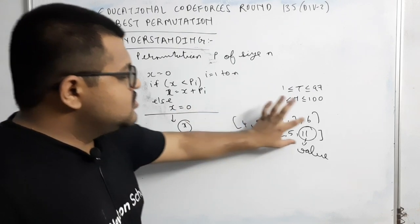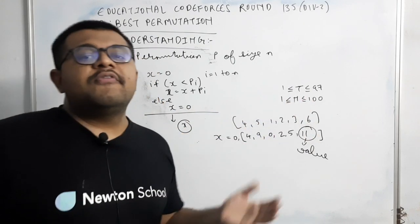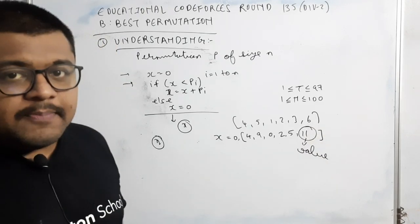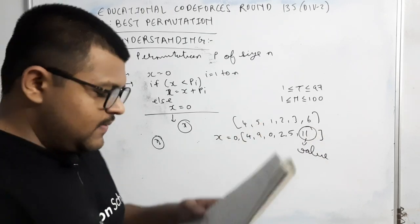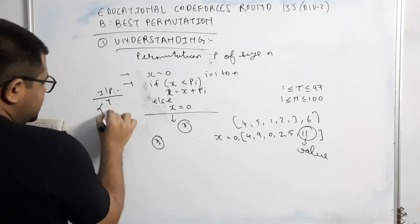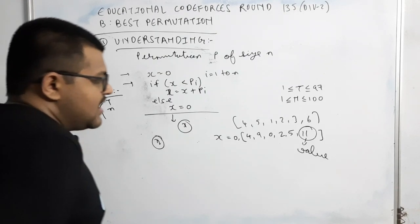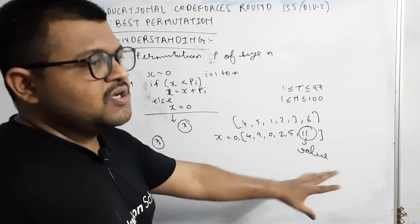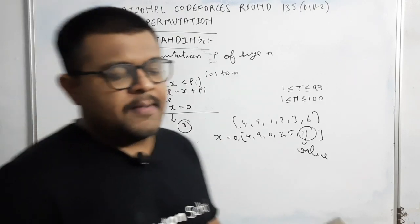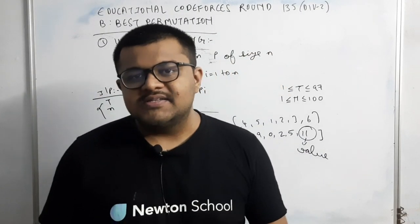If multiple such permutations exist, print any. So which permutation gives us the maximum final value of x. If there are multiple such permutations possible, then print any one. Input which is given? First line is the number of test cases.